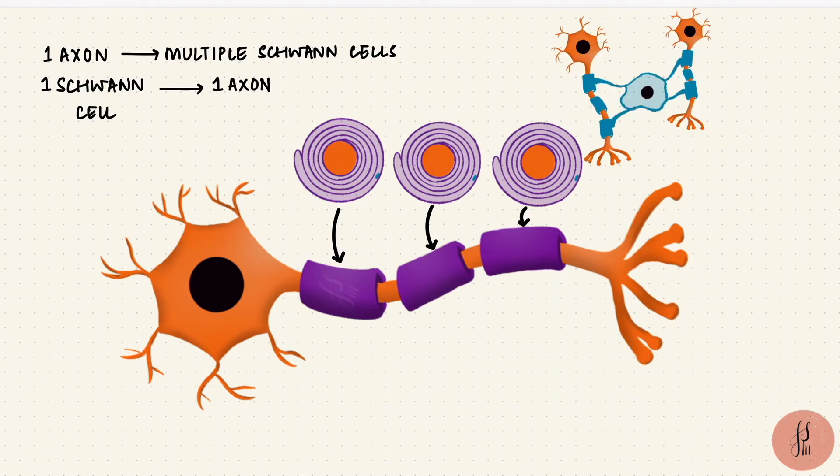This is versus oligodendrocytes, which do this job of myelination in the central nervous system. There, one oligodendrocyte can myelinate multiple axons.